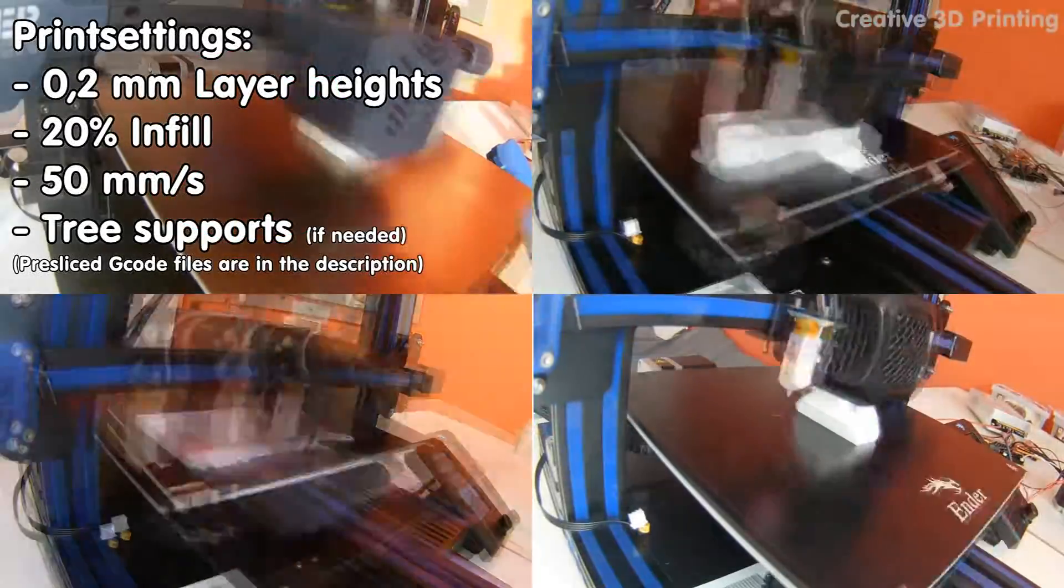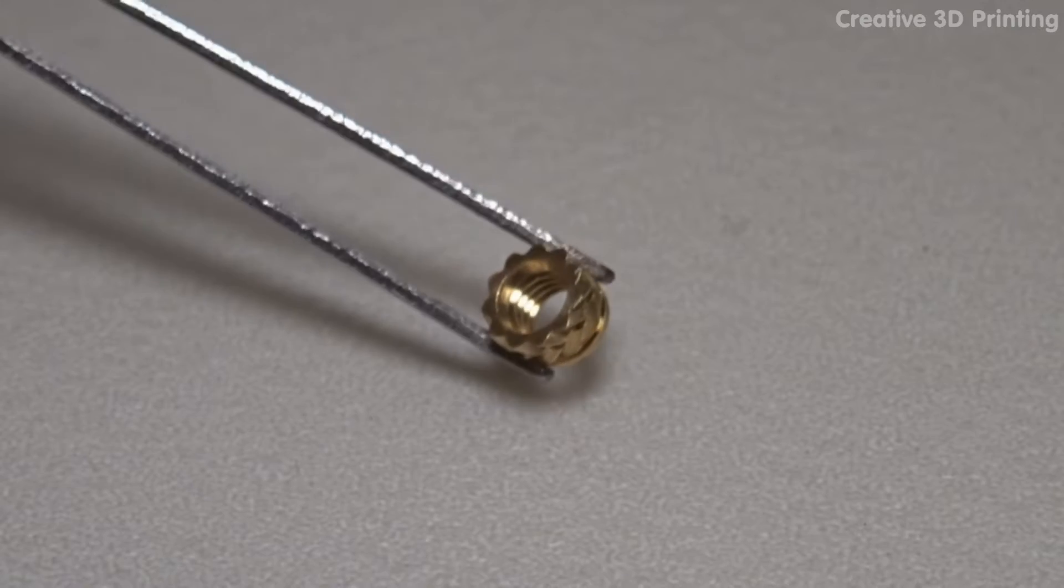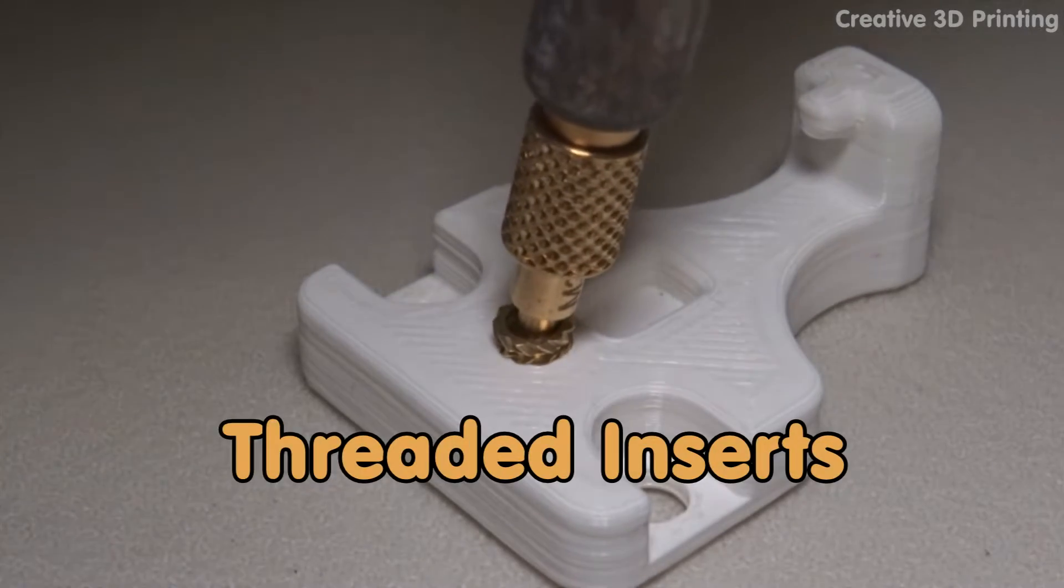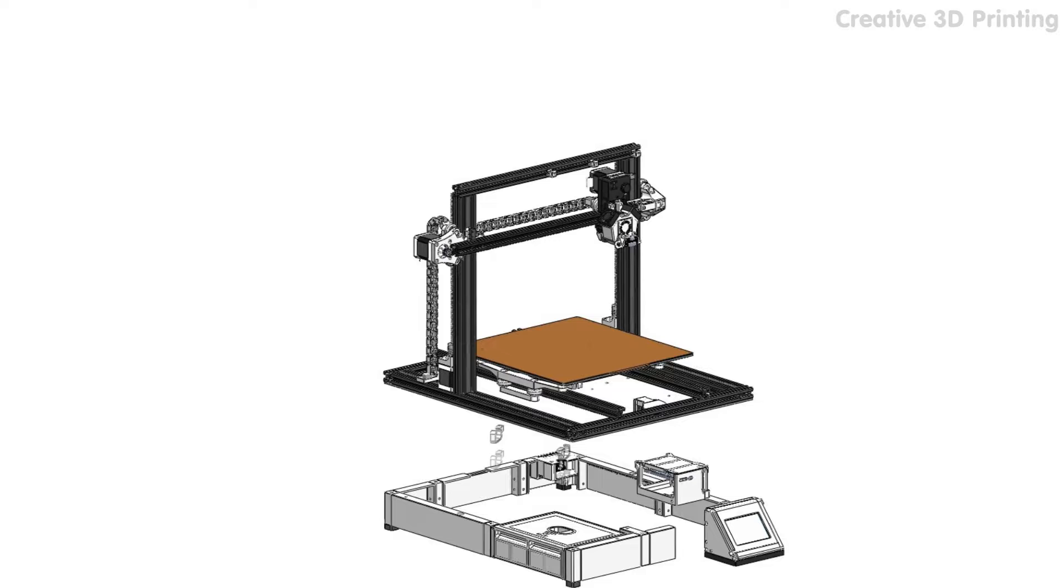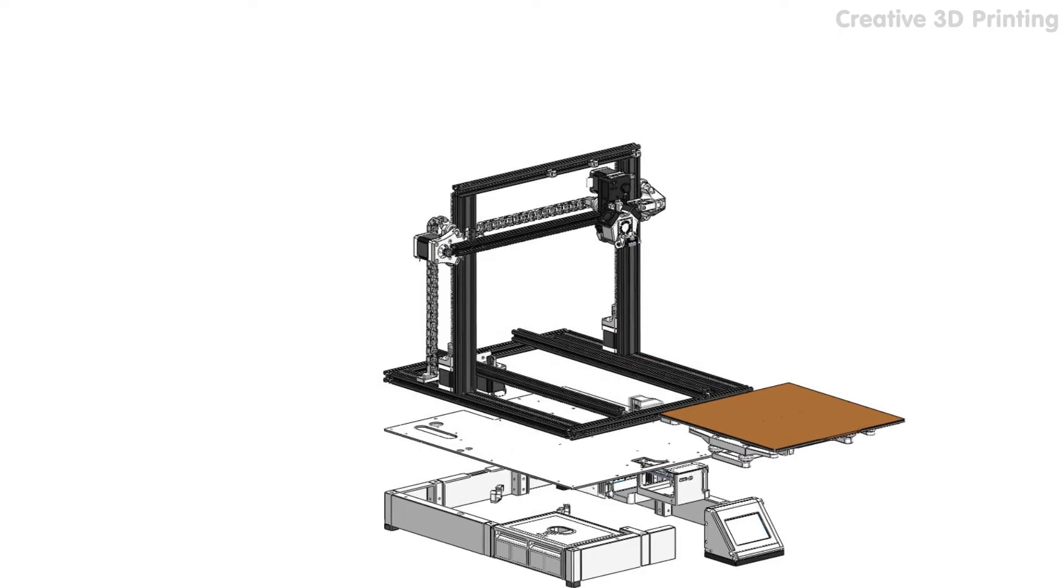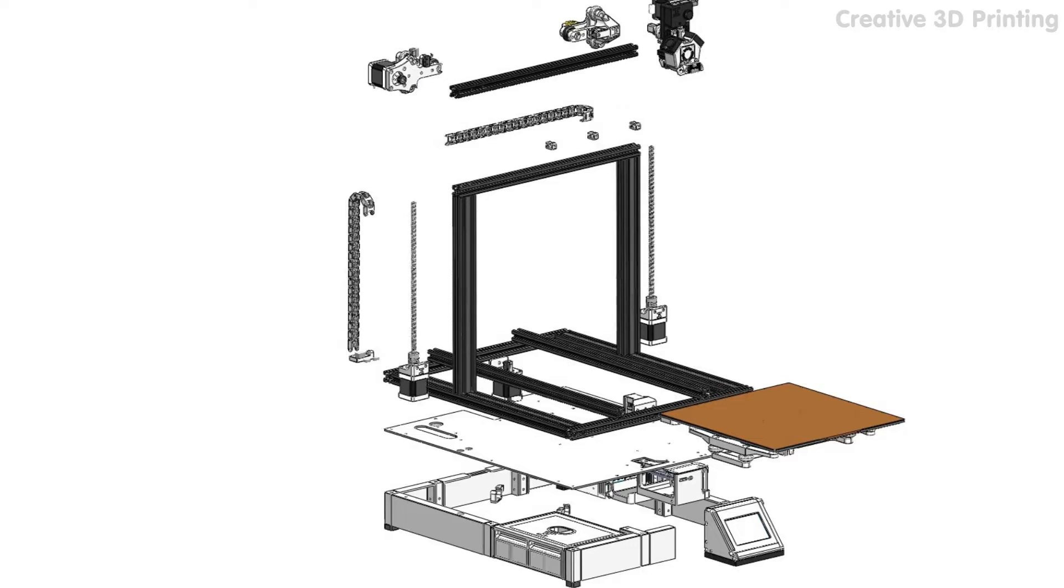To create the threads in printed parts, I used threaded inserts that I simply melted into the parts with a soldering iron. To assemble the 3D printer, I like to split it into different assemblies that will be combined into the complete printer later in the video.